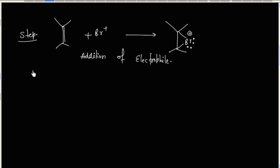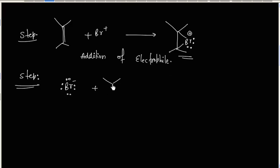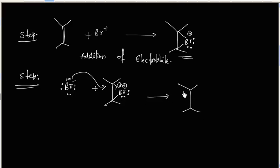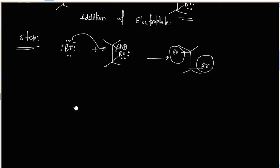In the next step, a nucleophile attacks. This time the nucleophile is Br⁻, so Br⁻ will attack on this bromonium ion. We can open this cycle, and the final product has two bromine atoms added — one mole of bromine added over the double bond. This is an addition reaction.